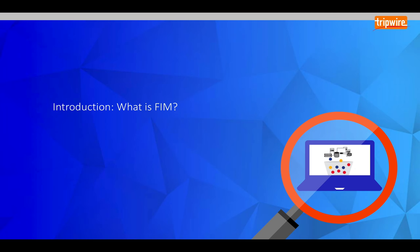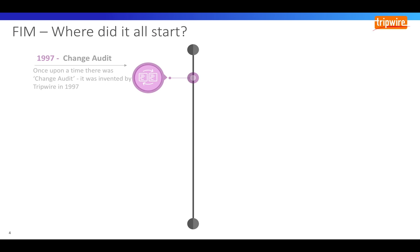What is FIM and where did that term come from? Tripwire was founded in 1997 and launched its first product known as Tripwire for Servers, which was commonly known as Change Audit. But it all started off with Gene Kim as a university project back in 1991, where he and a lecturer invented the concept to detect the presence of a famous worm known as the Morris worm.